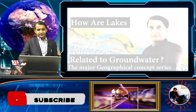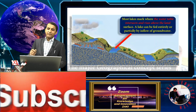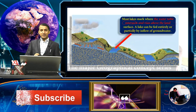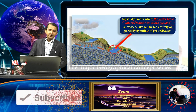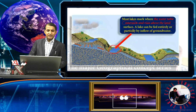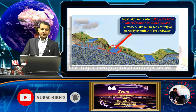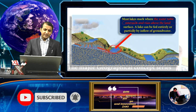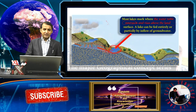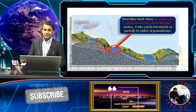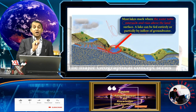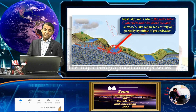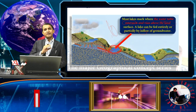Most lakes form where the water table intersects and rises above the land surface. Lakes can be fed entirely or partially by inflow from groundwater. This type of lake forms where the groundwater intercepts the surface — entirely formed by groundwater, or partially by groundwater and precipitation. Since inflow is more than outflow, these lakes are permanent and present across the globe near the water table.